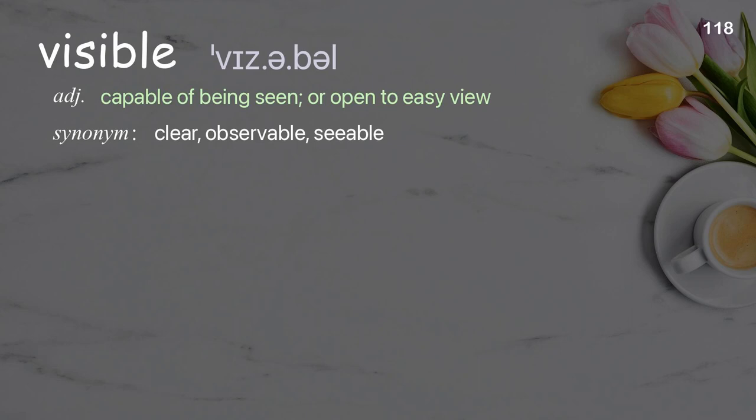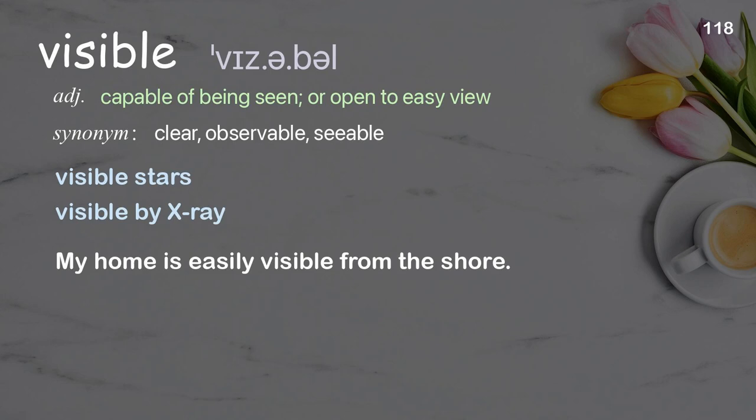Visible: capable of being seen or open to easy view. Examples: visible stars; visible by x-ray. My home is easily visible from the shore.